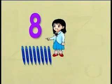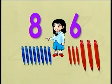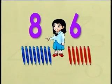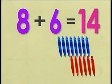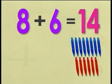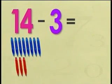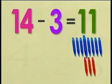Nicole has 8 blue pants and 6 red pants. She gives 3 red pants to her brother Nick. How many pants does she have left? We start by finding the total number of pants Nicole has. She has 8 blue pants and 6 red pants. So 8 plus 6 equals 14 pants. If she gives away 3 pants, then 14 minus 3 will give us the balance. So 14 minus 3 is 11. Nicole has 11 pants left.